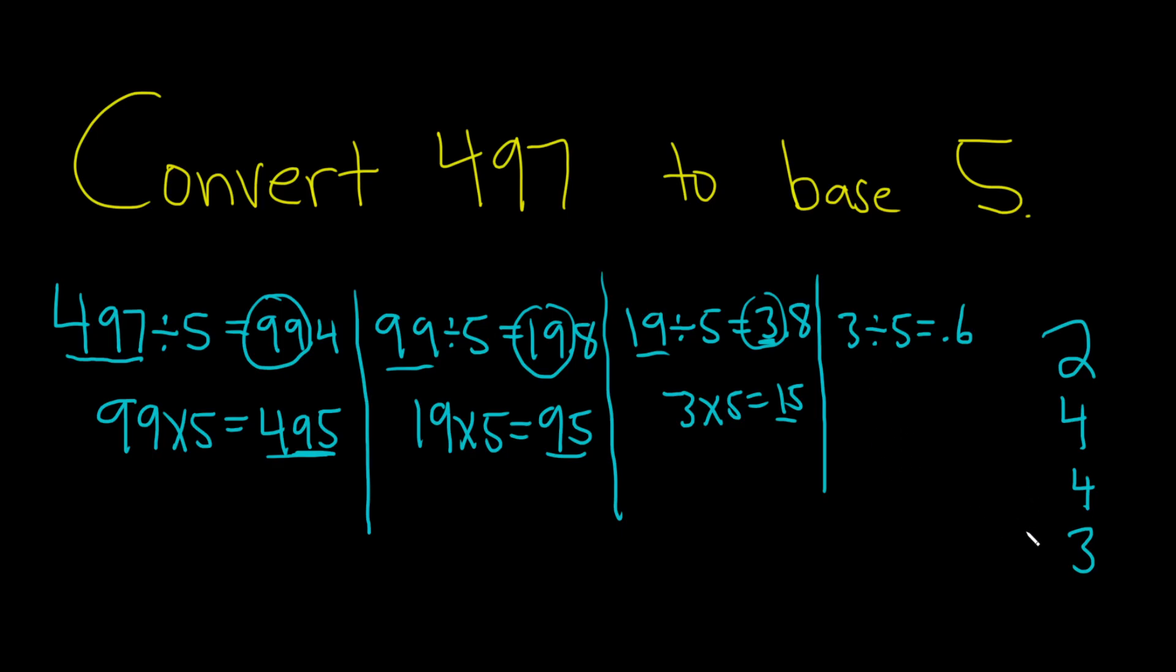Now you just read this backwards: 3, 4, 4, 2. And don't forget to put the 5 subscript. So 497 in base 10 equals 3442 in base 5. I hope this video has been helpful.